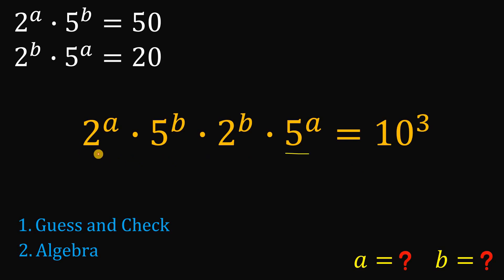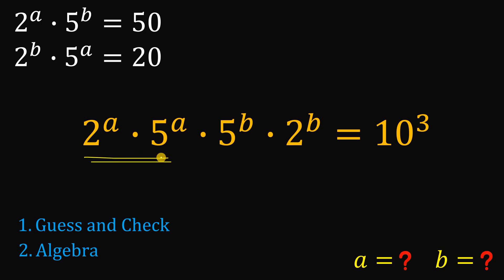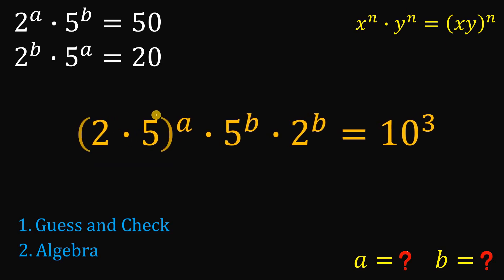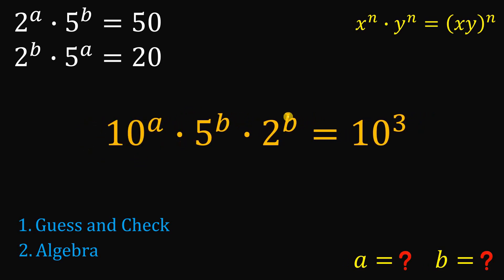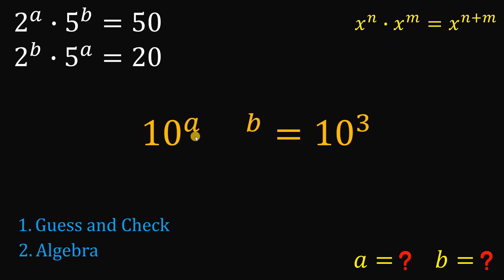Next, we rearrange some terms. We'll group terms with the same exponent but different bases, using the law of exponents: if we have the same exponent but different bases, we can write x times y raised to the power of n. So 2 raised to the power of a times 5 raised to the power of a can be rewritten as 2 times 5 raised to the power of a, which equals 10 raised to the power of a. And 5 raised to the power of b times 2 raised to the power of b gives us 10 raised to the power of b. Then, applying the law for same base with different exponents, we copy the base 10 and add the exponents to get a plus b.